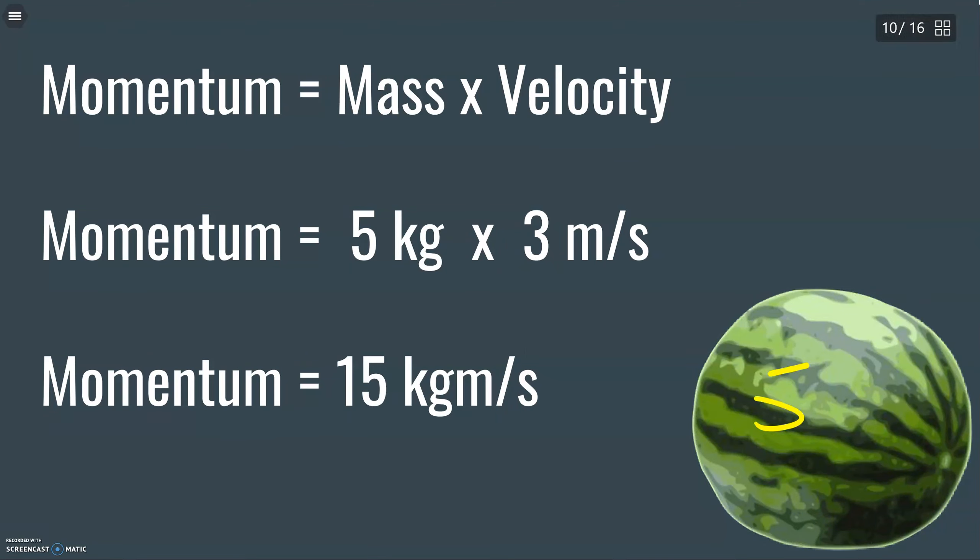So if we had a 5 kilogram watermelon that we were dealing with, let's say we threw it at 3 meters per second, then we're just going to multiply those together and we get 15 kilogram meters per second. There's no fancy new unit for momentum. It doesn't get its own. Poor momentum has to deal with whatever it's given. Kilograms, meters per second.